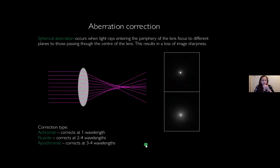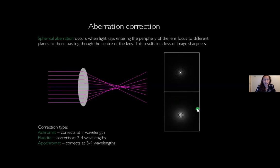The next common aberration is spherical aberration. This is caused by light entering the periphery of the lens being refracted more than light entering the center, meaning the image cannot be brought into a sharp focus — resulting in blurring. The same three lens types can correct for this to some degree: an achromat offers correction at one wavelength, fluorites correct two to four wavelengths, and apochromats three to four.